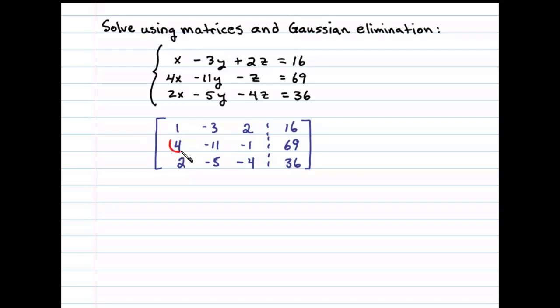To try to replace this 4 with a 0, we can do that here by multiplying the first row by negative 4. Doing that, we'll be left with negative 4, 12, negative 8, and negative 64, and we'll write the second row right underneath that.